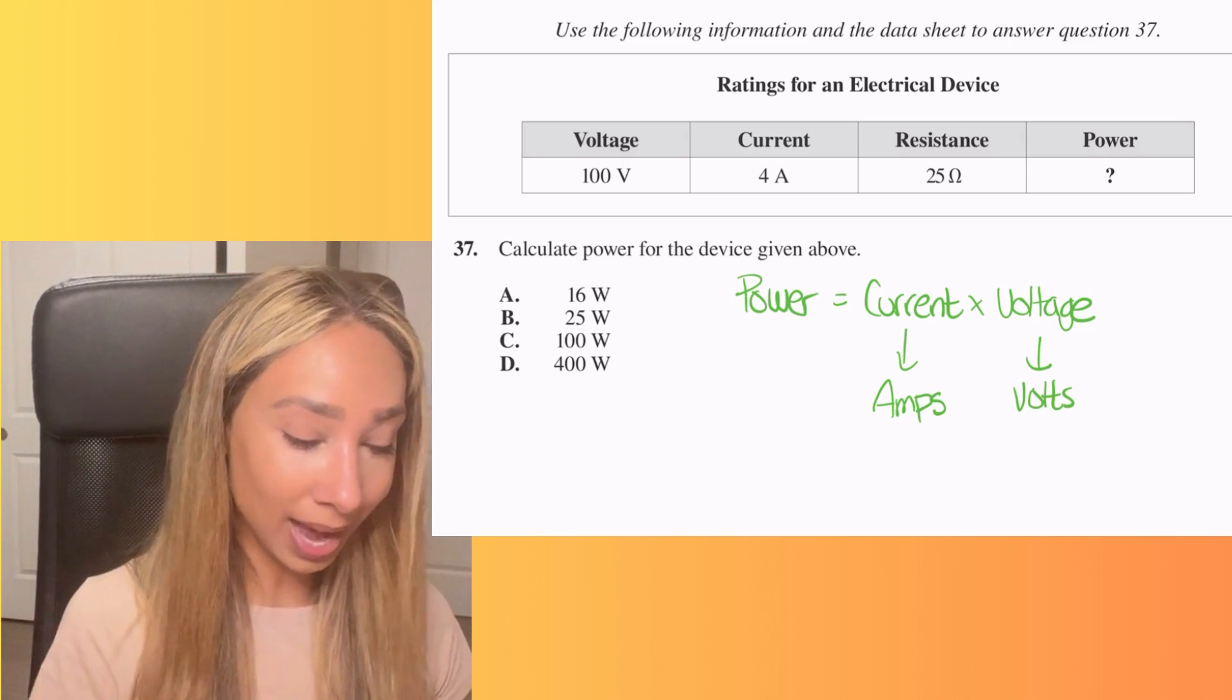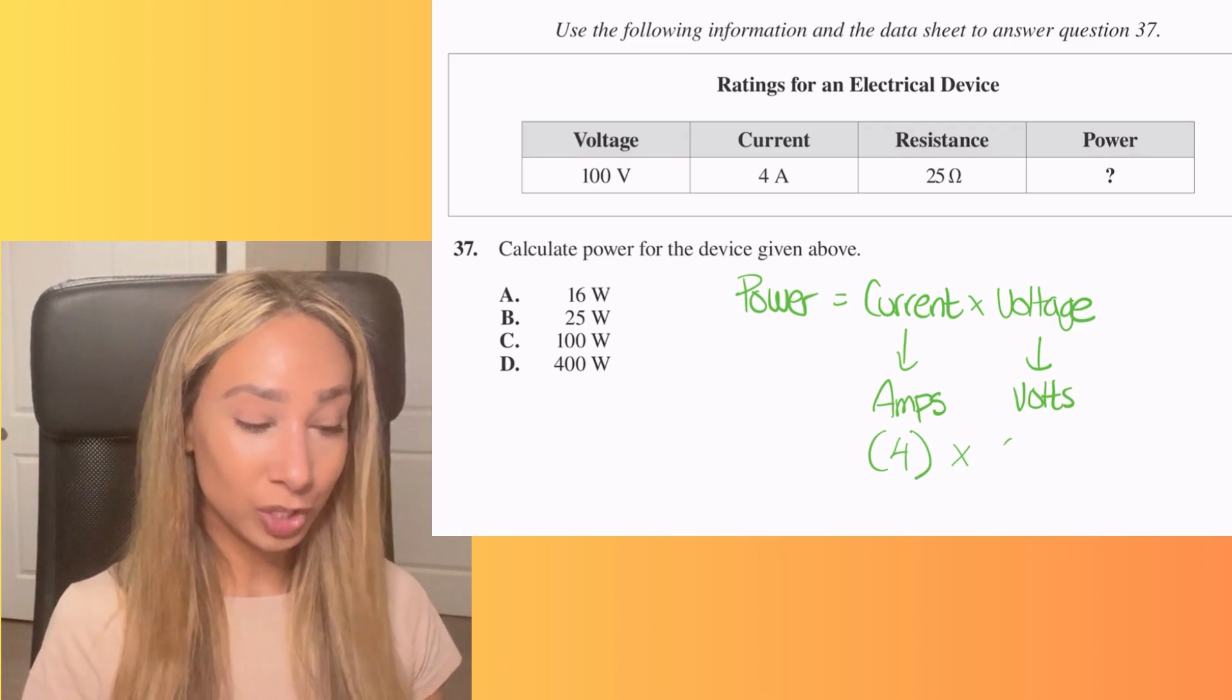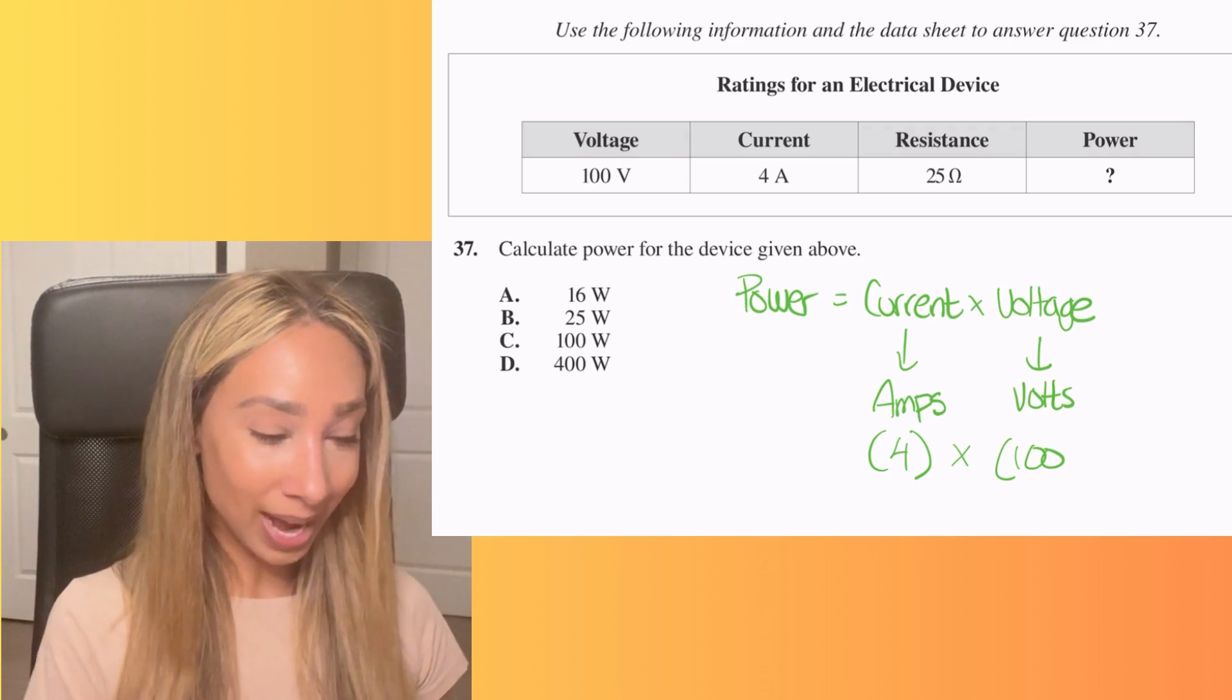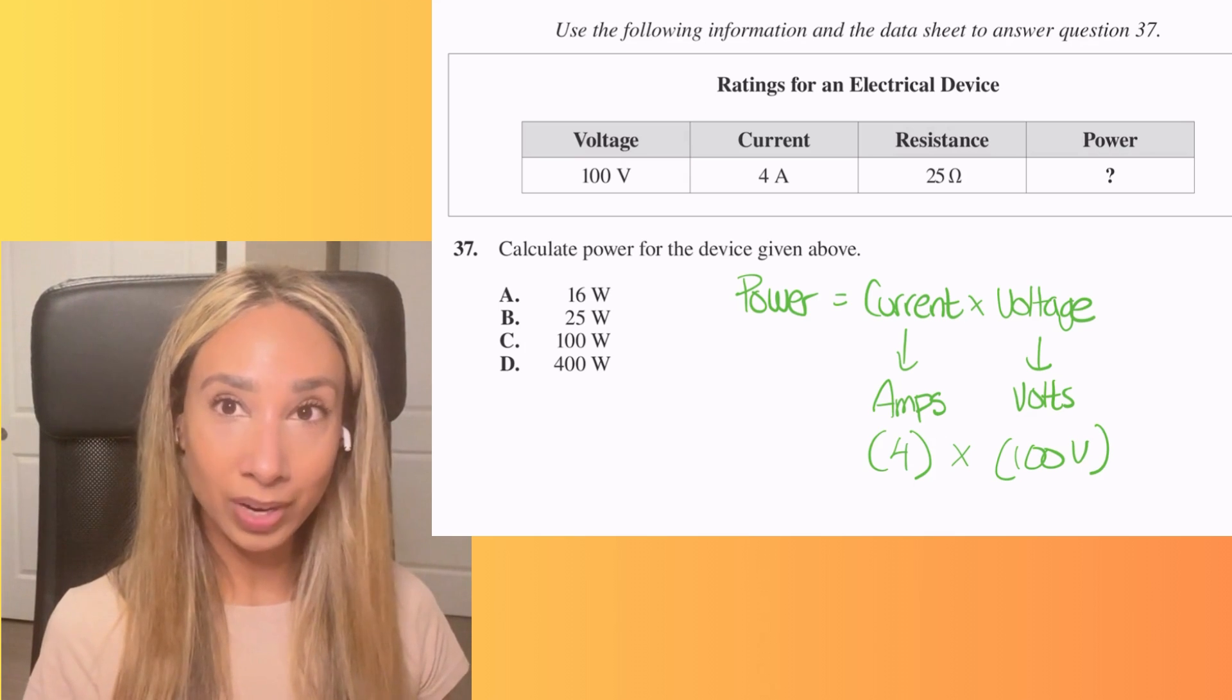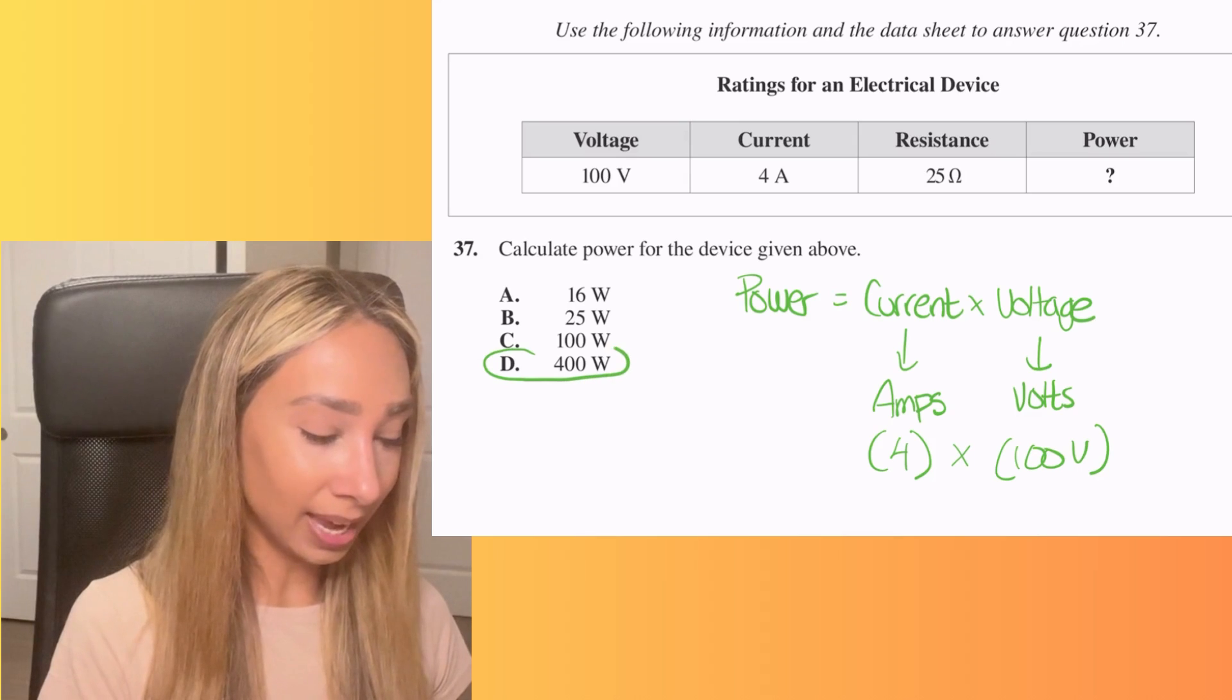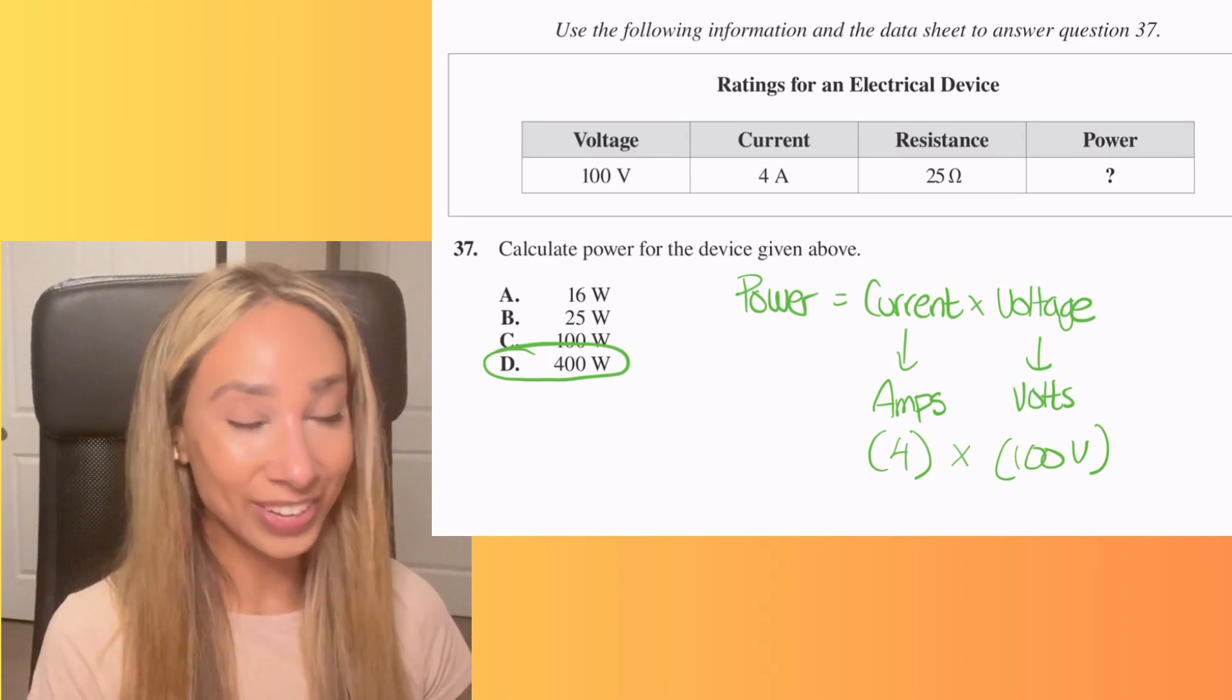So our current is going to be measured in amps and our voltage, of course, is going to be measured in volts. So now we just have to see from that information about which numbers we have to use, because they might've given us some extra information in this question. So I'm looking at it. We have our amps as four, we have our voltage, which is 100. So now all we have to do is multiply those two numbers together, four times 100. Well, that's going to give us a reading of 400. So the answer for this one is D.